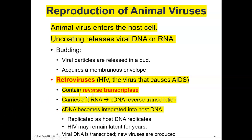Retroviruses contain an enzyme called reverse transcriptase. Recall from biology that transcription is when DNA makes a copy of messenger RNA, which then carries the code to a ribosome where proteins are produced. With reverse transcriptase, however, you start with RNA because it's an RNA virus. Reverse transcriptase converts that RNA into DNA — called cDNA, which may stand for complementary DNA — and that DNA is then able to carry out transcription and translation.